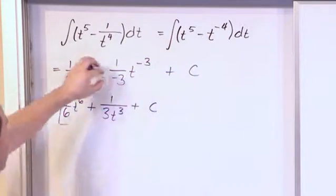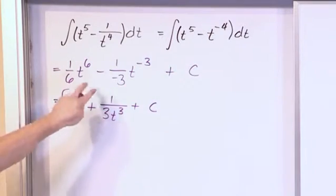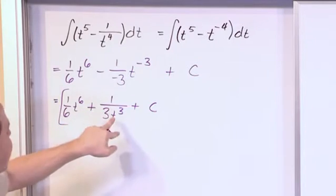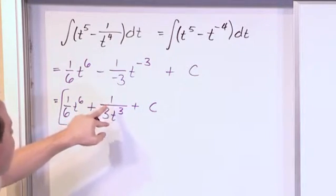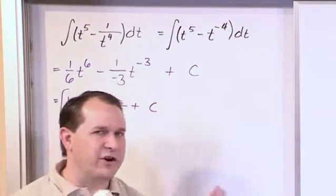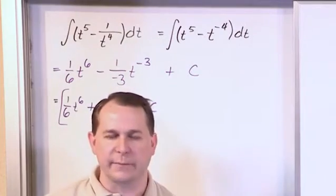I mean, really, this is the answer. This is all correct. It's just how you choose to represent it. I'd make this into a positive. I could have left this as 1/3 t to the negative 3 power. That's totally fine. I can leave t to the negative 3 power.